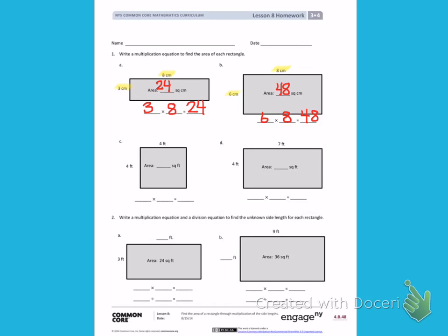You are doing the same thing on letters C and D. Number 2. Write a multiplication equation and a division equation to find the unknown side length for each rectangle.